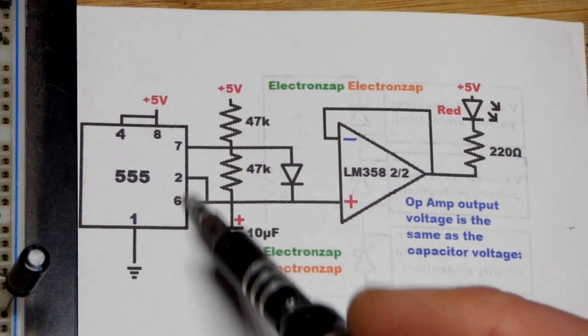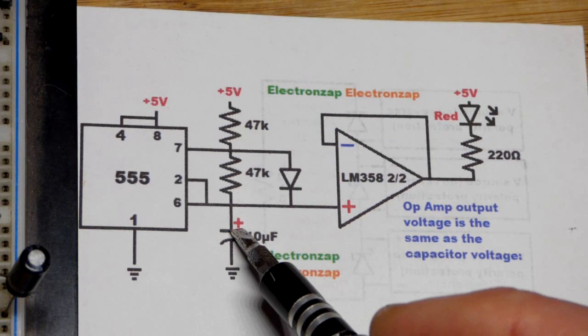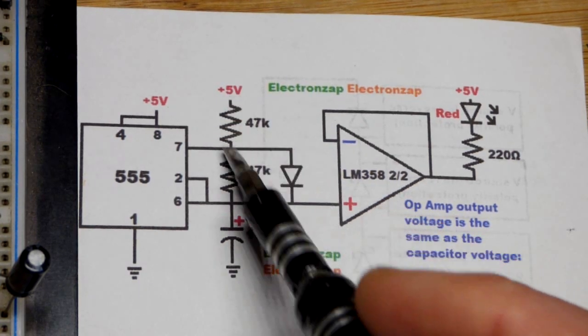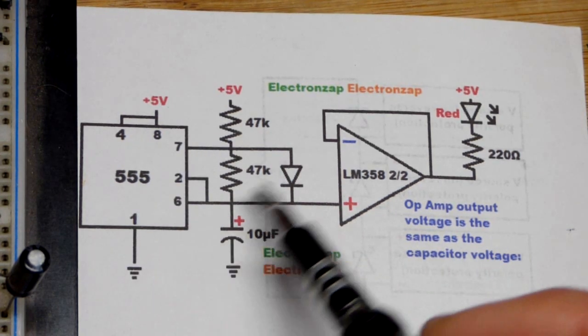It keeps bouncing back between the two of them thanks to these two inputs. If we wanted to make this take twice as long, we could use 100k resistor there as well, it'd be twice as long to charge and discharge.